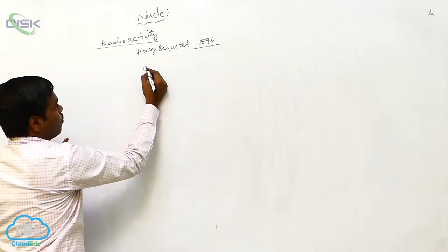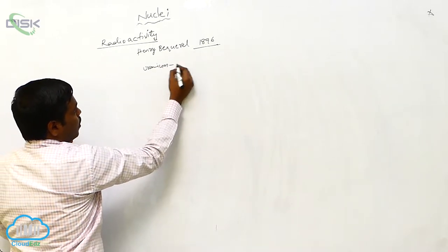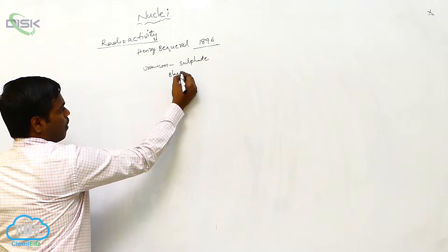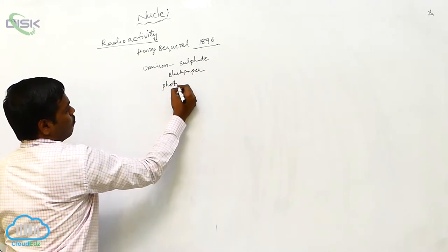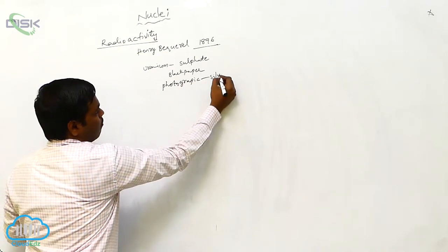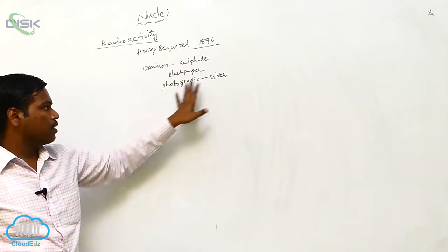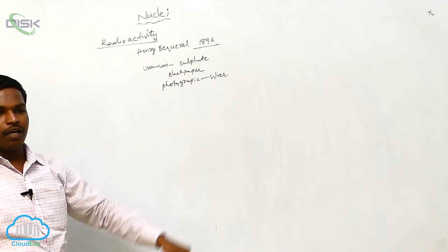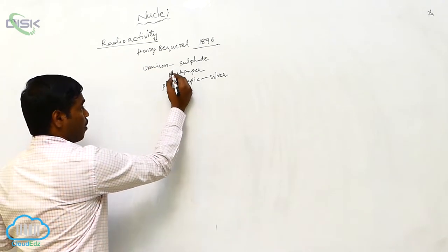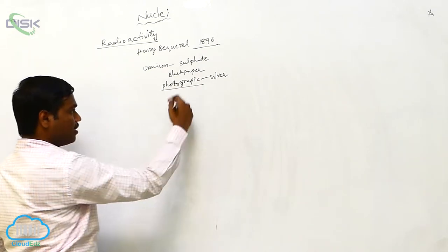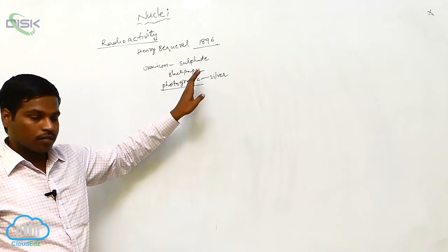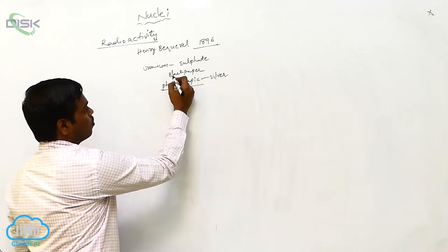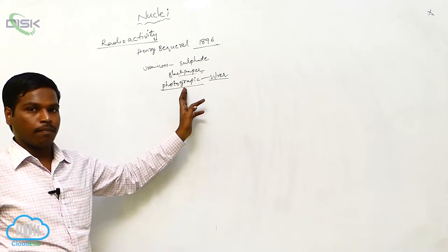When he was doing experiments with uranium sulfate, this uranium sulfate was wrapped in black paper along with a photographic plate. The photographic plate was wrapped in silver, and these were all wrapped in black paper and placed separately inside a box. After many hours, he found that the photographic plate contained some black dots — meaning something had penetrated through the black paper and silver onto the photographic plate.